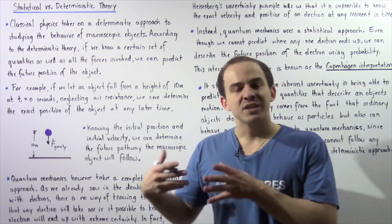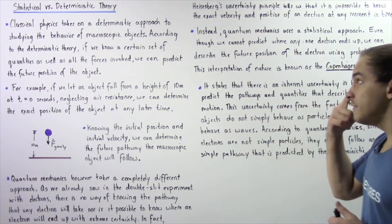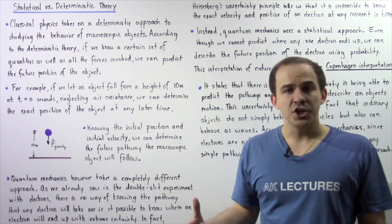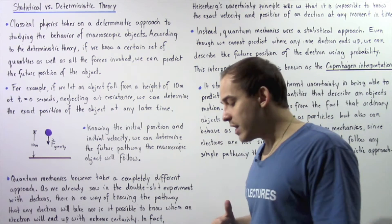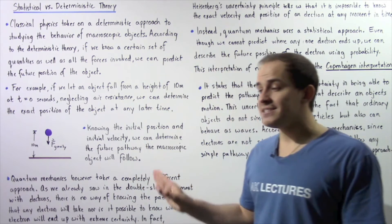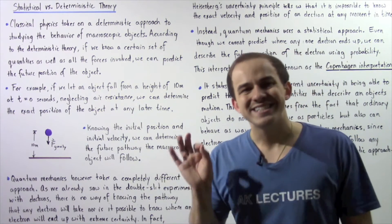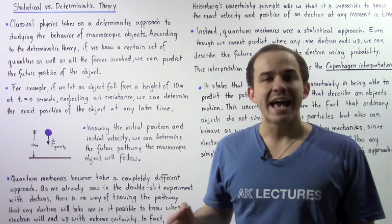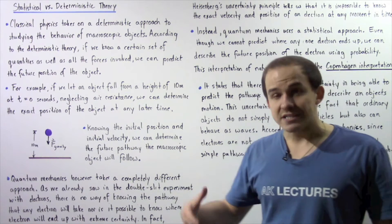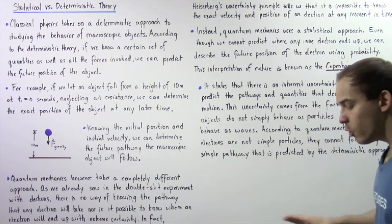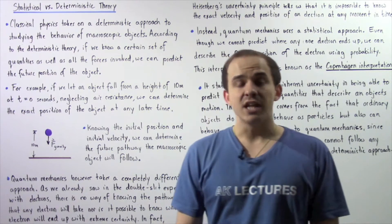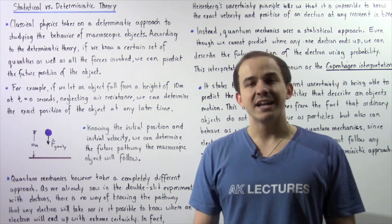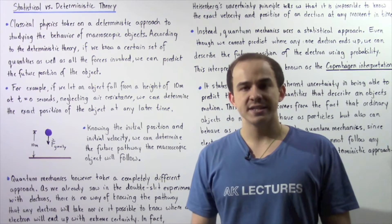Classical physics takes an approach known as the deterministic approach in studying the behavior of macroscopic as well as microscopic objects. It basically treats objects as if they were simple particles. According to the deterministic theory, if we know certain quantities such as velocity and position, and if we know all the forces acting on that object, we can readily determine the future position and pathway of that object.